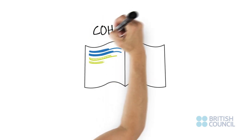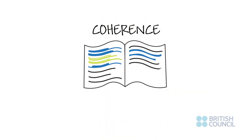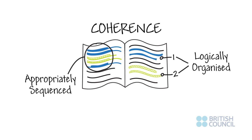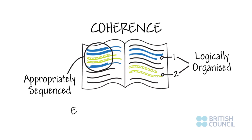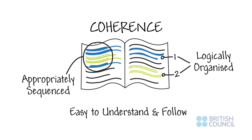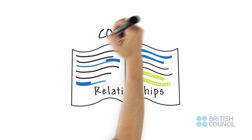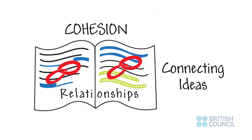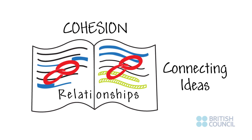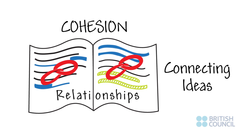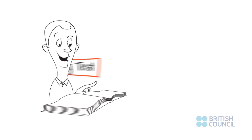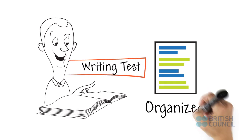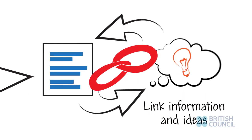Coherence refers to the flow of your writing. Your ideas should be logically organized and appropriately sequenced into paragraphs so they are easy to understand and follow. Cohesion refers to linking words that help you connect ideas and show the relationship between paragraphs, sentences, or parts of sentences. So, this criteria looks at how a writing test answer is organized and how to link information and ideas.